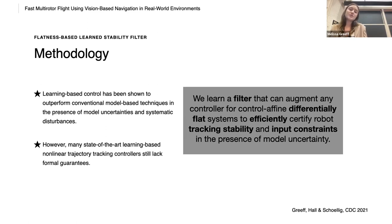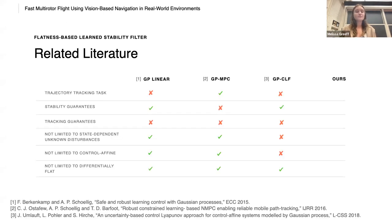And so we learn a filter that can augment any controller for control-affine differentially flat systems to efficiently certify robot tracking stability and input constraints in the presence of model uncertainty. Compared to the most closely related work, our approach can be applied to trajectory tracking tasks while providing stability and tracking guarantees without assuming that the unknown disturbance or dynamics is only state-dependent.